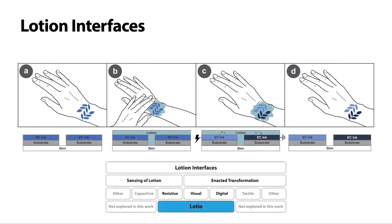In this talk, we detail the design, fabrication, and applications of Lotio, an exemplar lotion interface that senses lotion and enacts a visual transformation. It is a low-power electrochromic skin-worn display that leverages a DIY-friendly, straightforward fabrication method and safe materials.